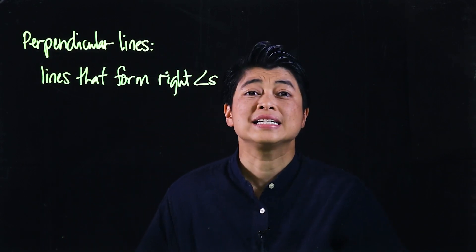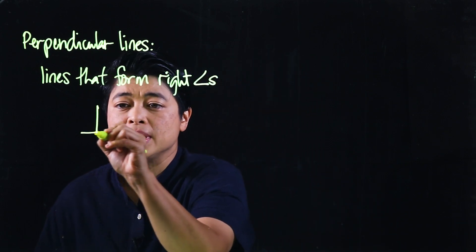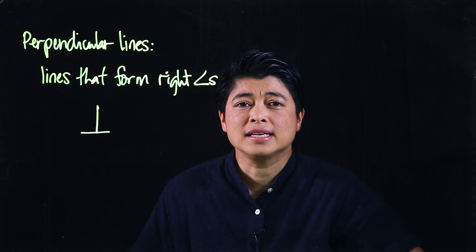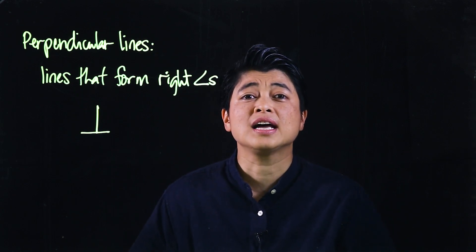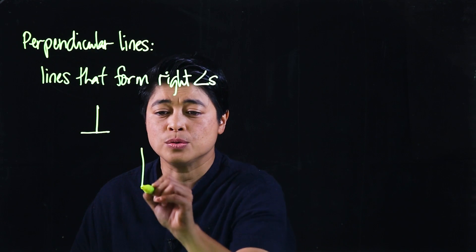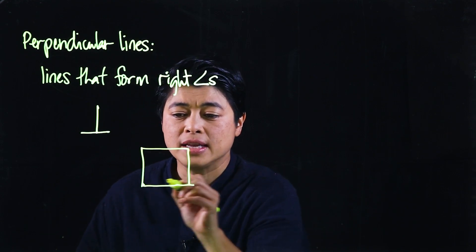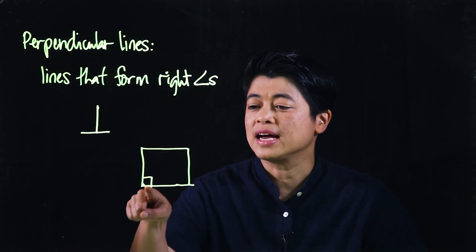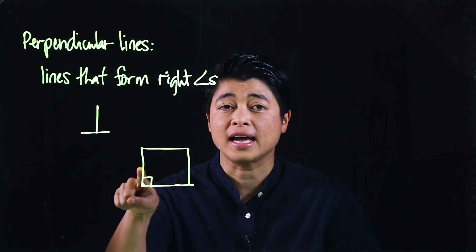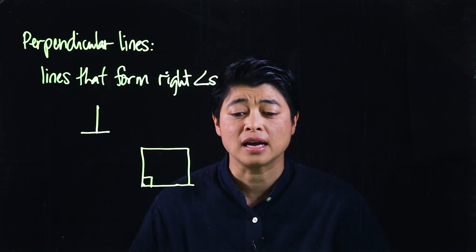The symbol for perpendicular would be that. Now, an angle is not considered a right angle unless indicated. In a drawing, the small square symbol means that it's a right angle, which means those two lines are perpendicular — that's how you can tell if they're perpendicular.